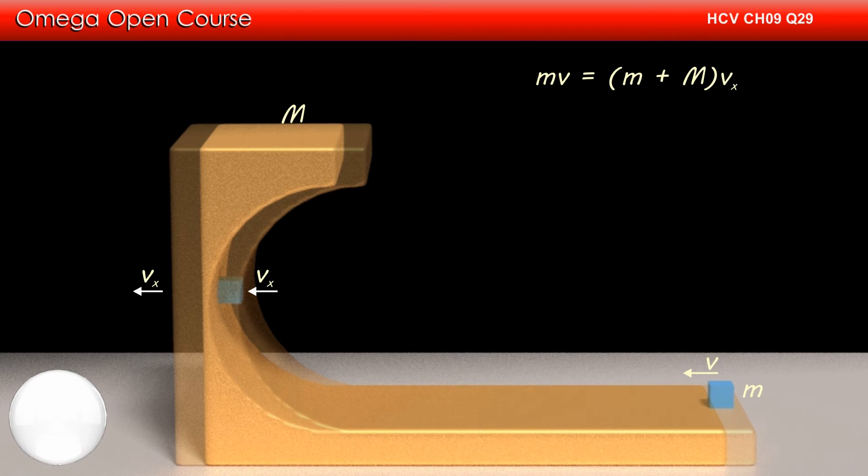The initial momentum of the system is mv. The momentum of the system in the horizontal direction at the current instant is (m + M)Vx. Since there is no external horizontal force acting on the system, the horizontal momentum of the system must be conserved.